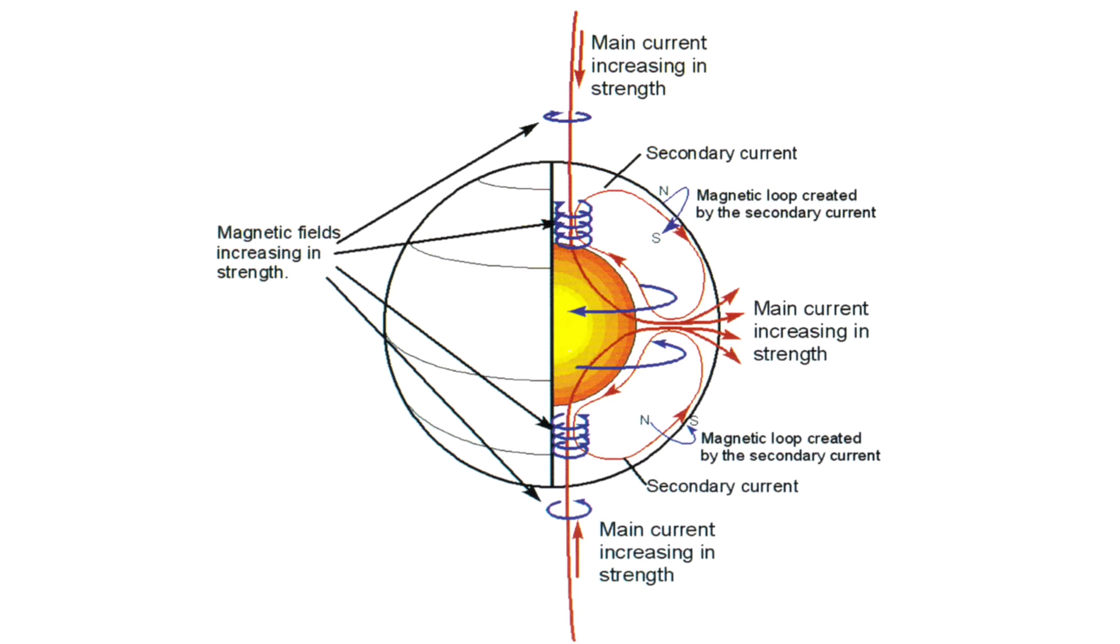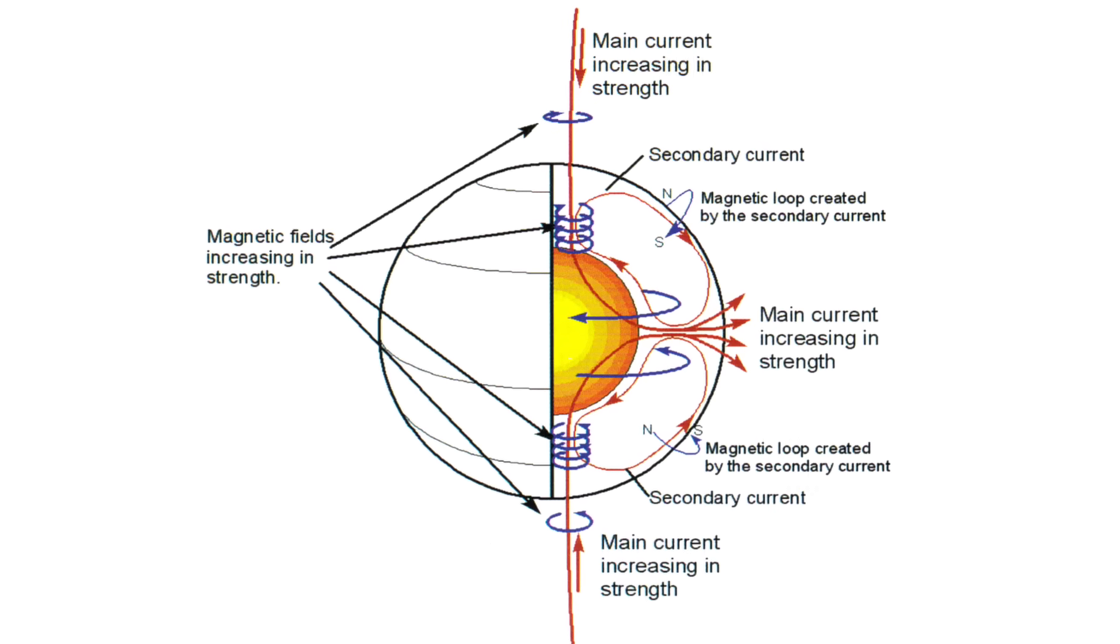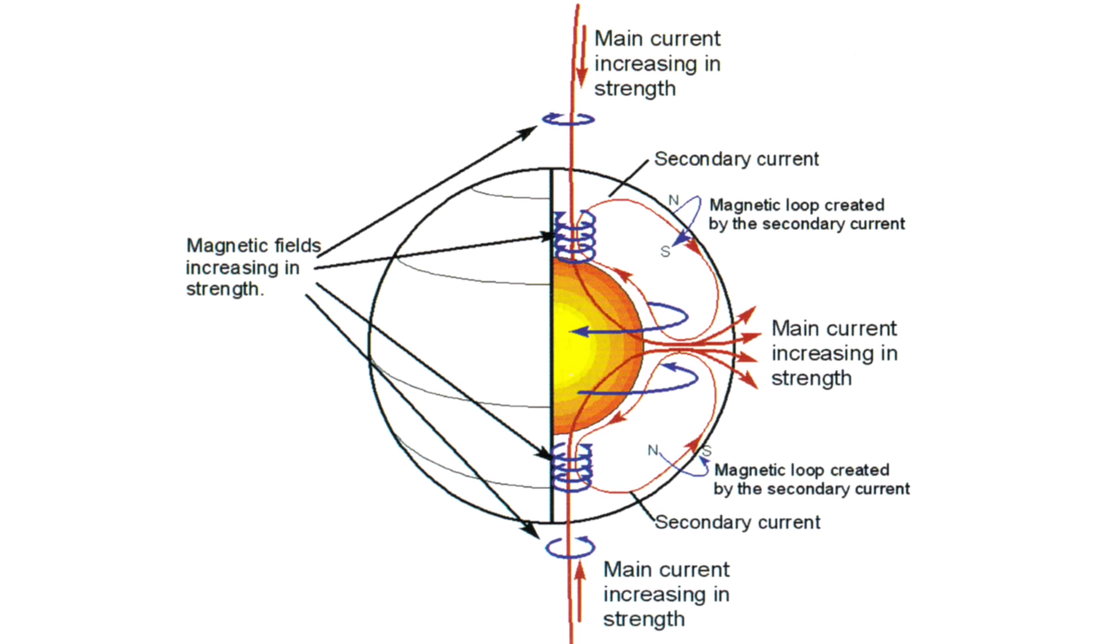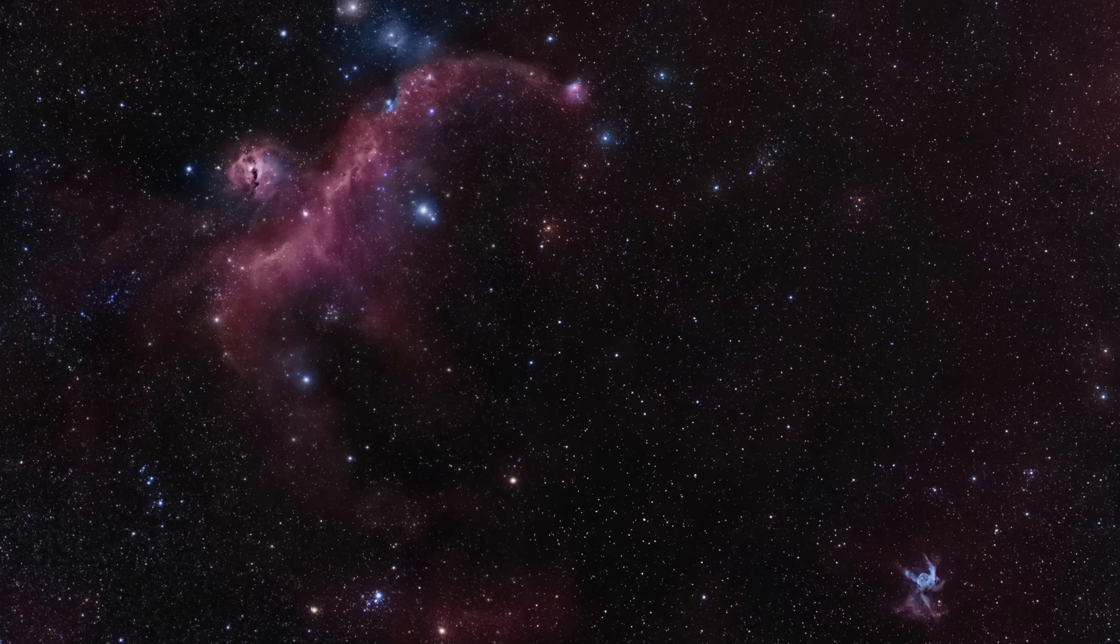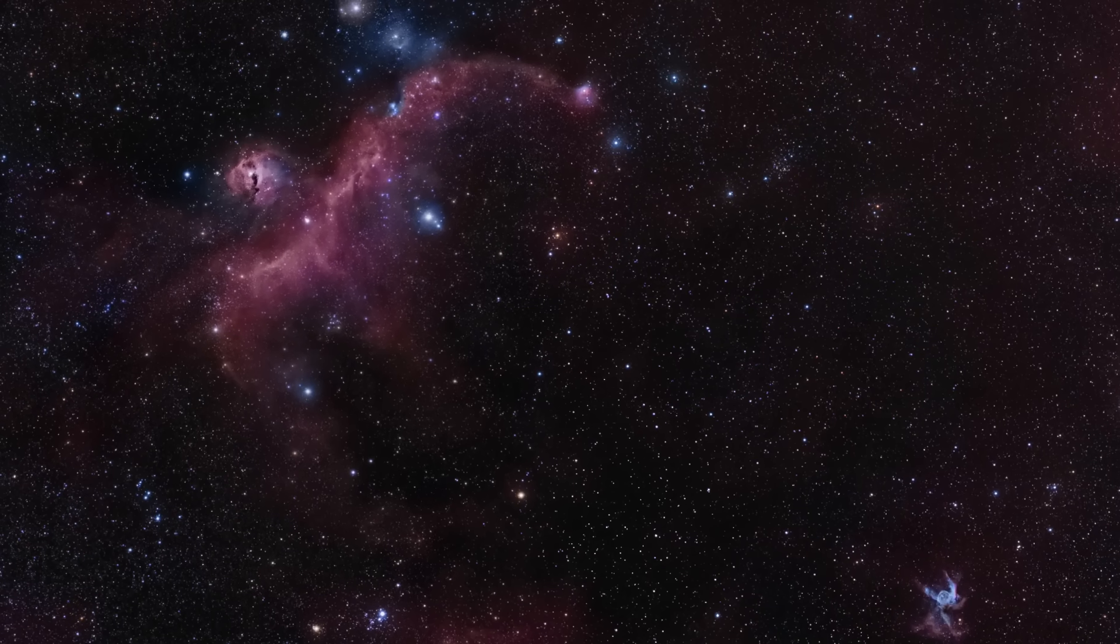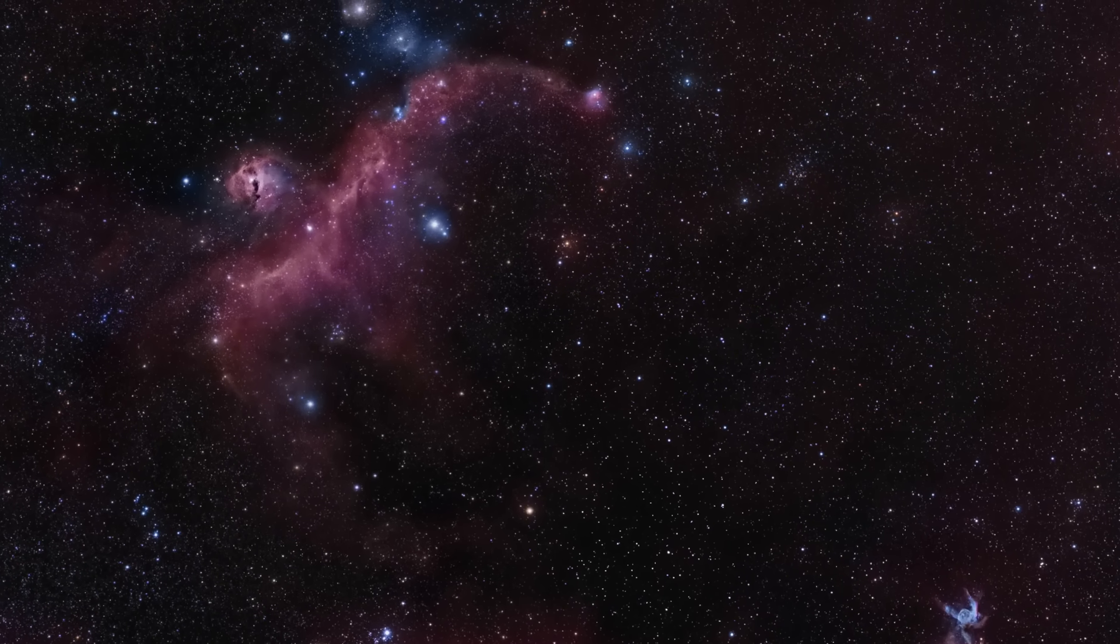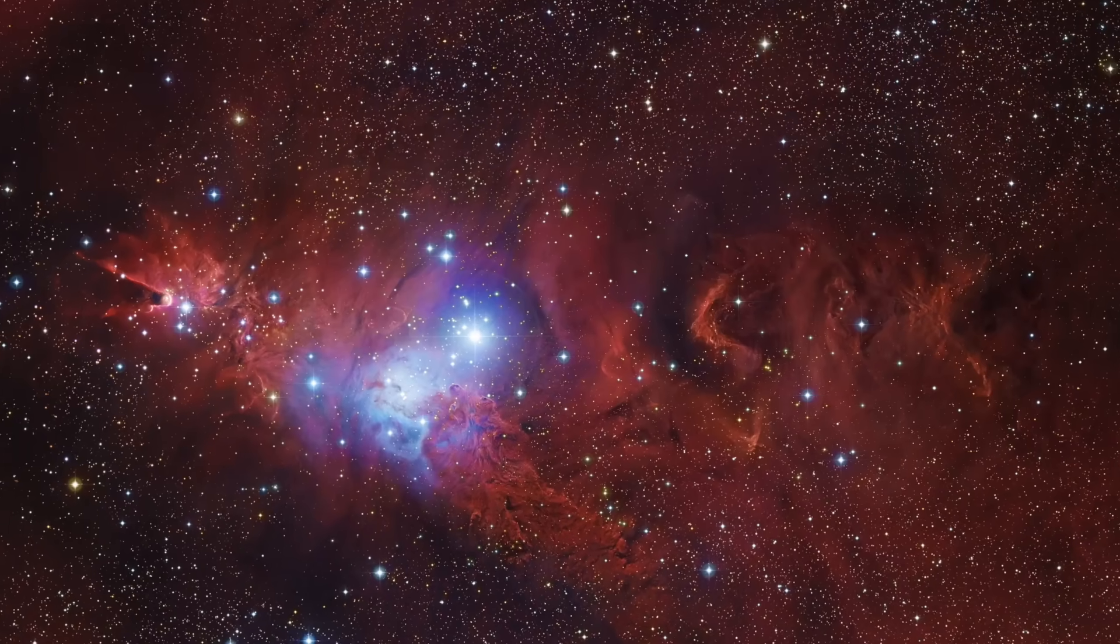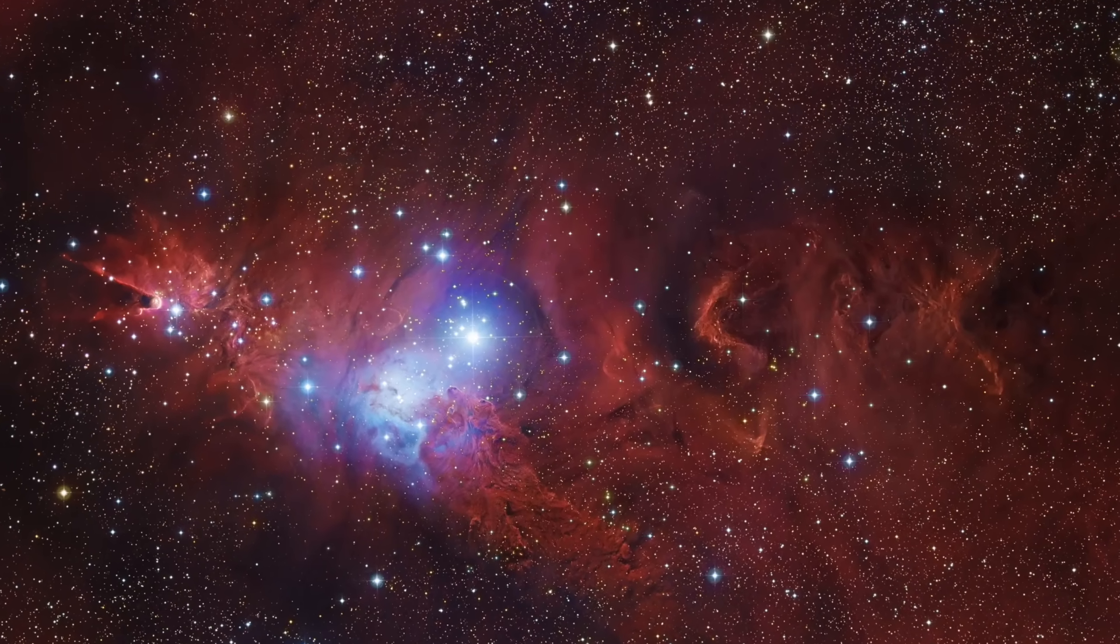An electric star wouldn't begin with the cloud and its gravity. It would begin with charge separation. Everything we see in the universe, with the possible exception of a few specks of planets and reflection nebulas, is ionized to some degree, even those ubiquitous clouds of hydrogen.